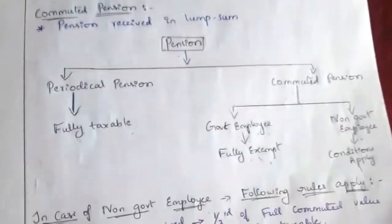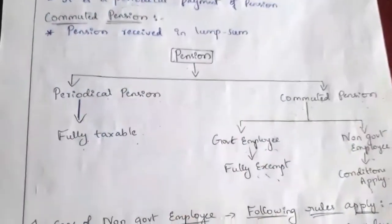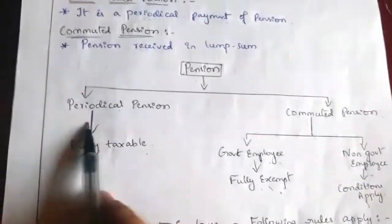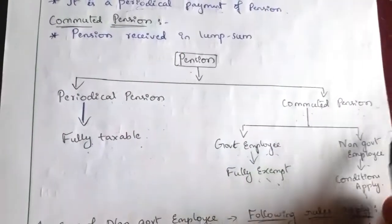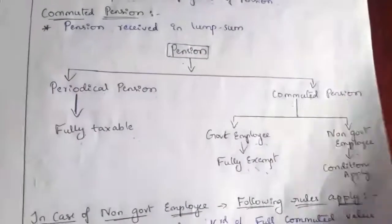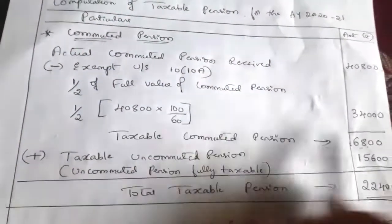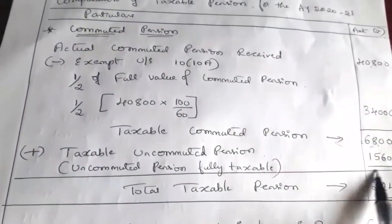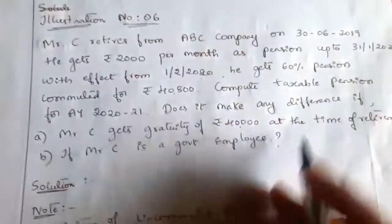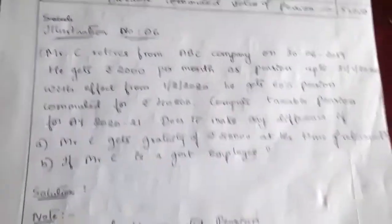In case of a non-government employee, uncommuted periodical pension is fully taxable. For commuted pension, the condition depends on whether gratuity is received. Since no gratuity here, half of the full commuted value is exempt and the balance is taxable. Total taxable pension is ₹22,400.